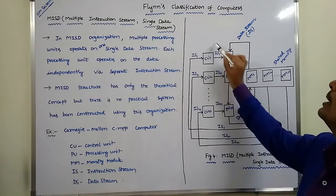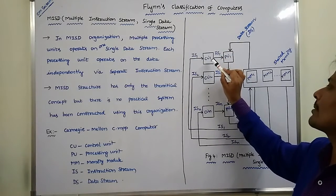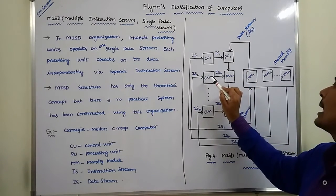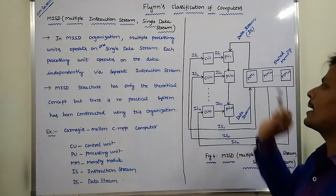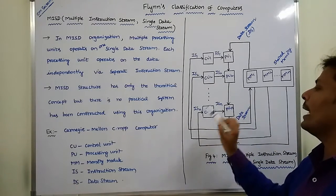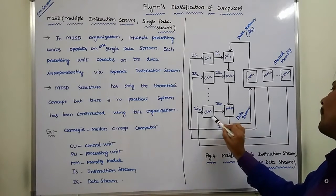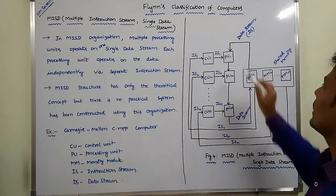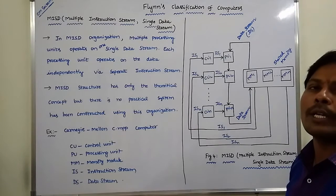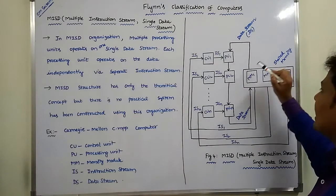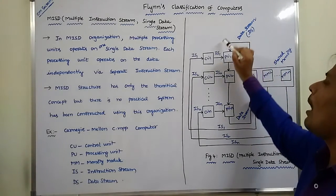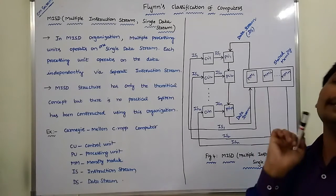Control unit 1 sends the corresponding instruction stream to processing unit 1. Control unit 2 sends the corresponding instruction stream to processing unit 2. Control unit N sends the corresponding instruction stream to processing unit N. Each processing unit takes instructions from its corresponding control unit and executes those instructions with data taken from the shared memory as a data stream.